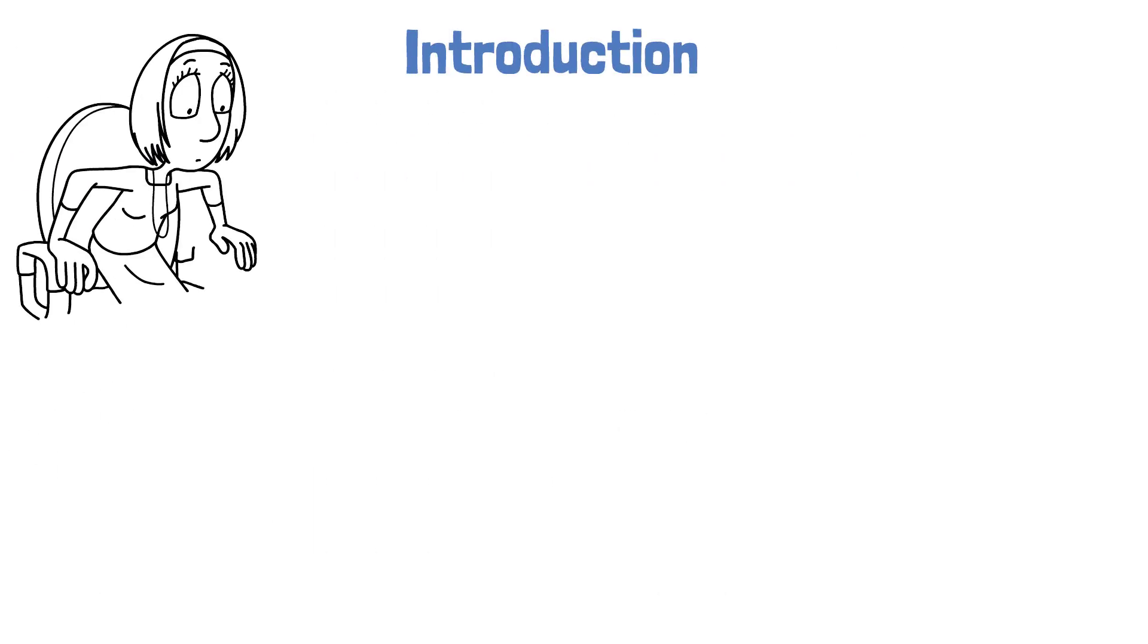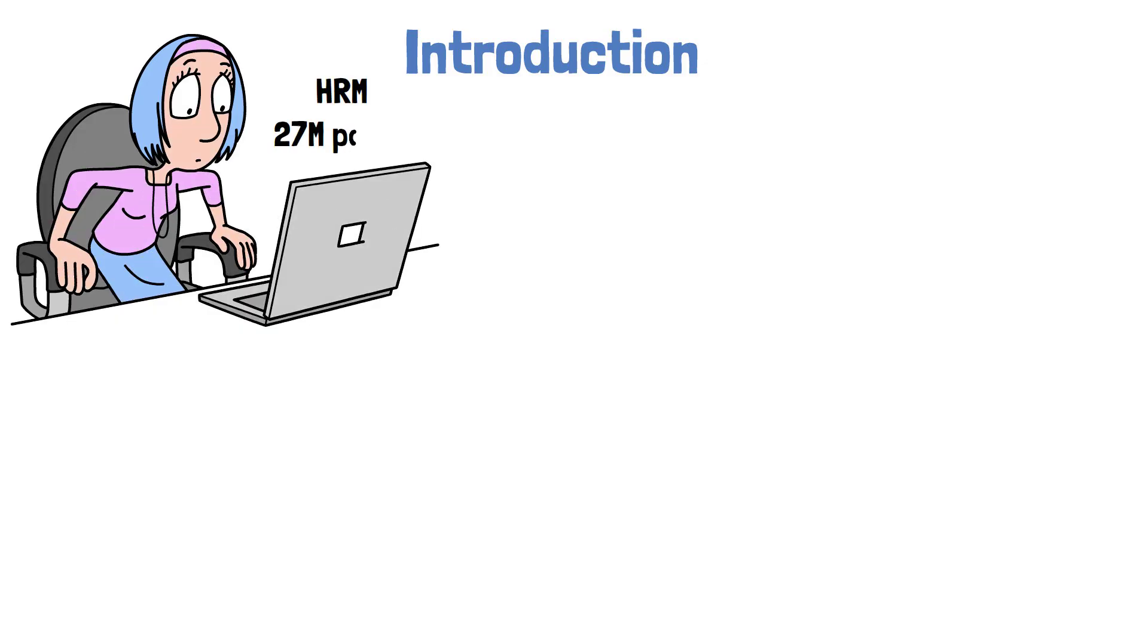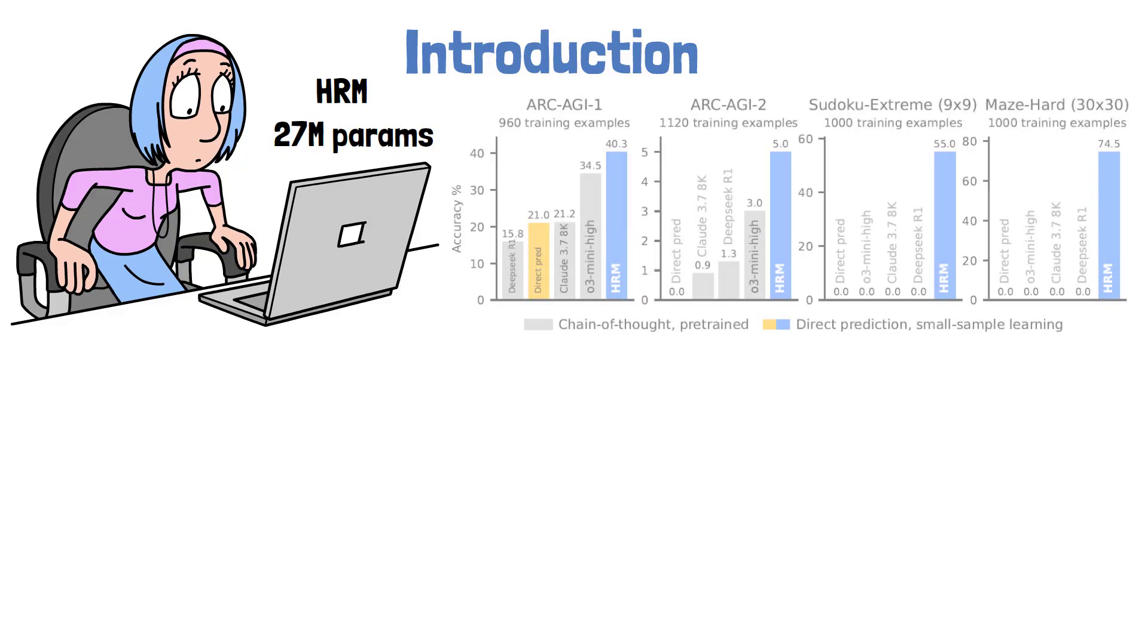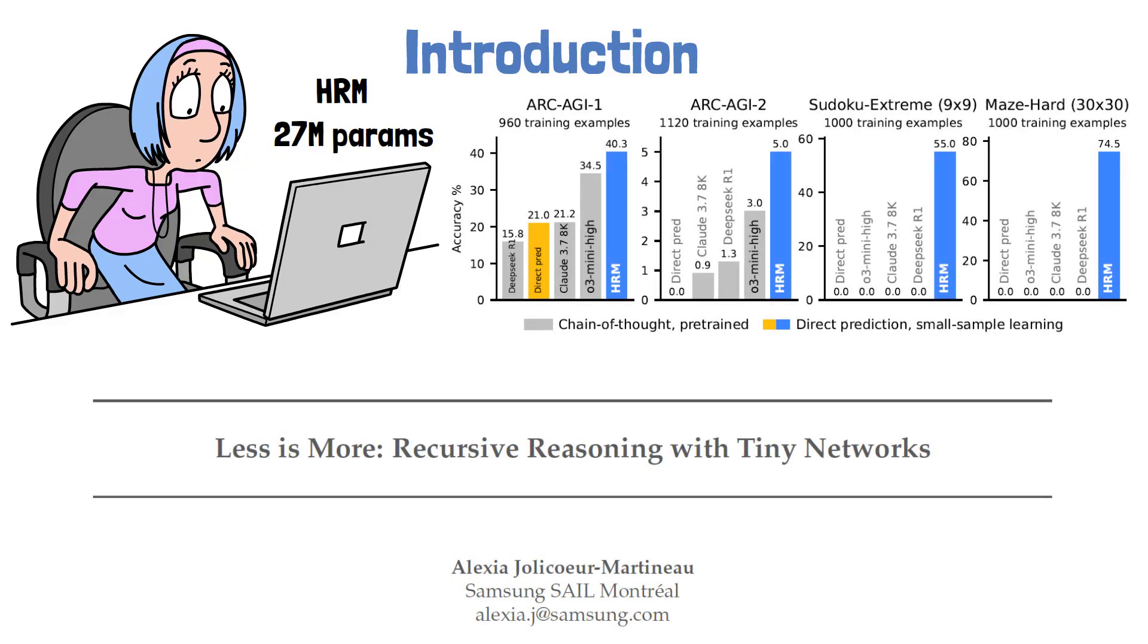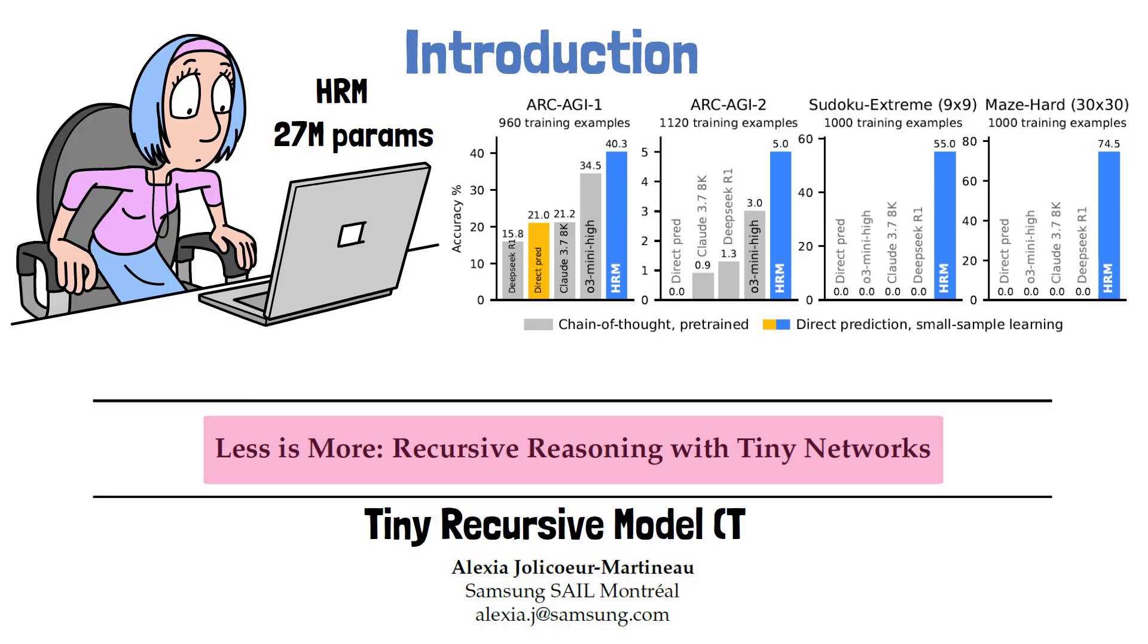A couple of months back, we reviewed a new architecture called the Hierarchical Reasoning Model, or HRM, that with just 27 million parameters was able to beat top large language models on some of the most challenging reasoning benchmarks. Now a new paper titled Less is More: Recursive Reasoning with Tiny Networks introduces a new model architecture inspired by HRM called Tiny Recursive Model, or TRM, with only 7 million parameters.